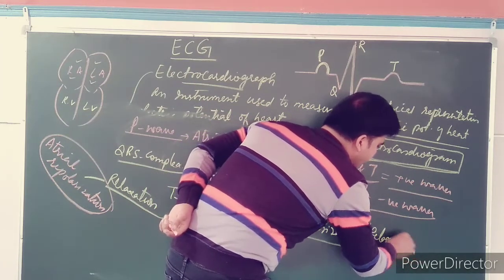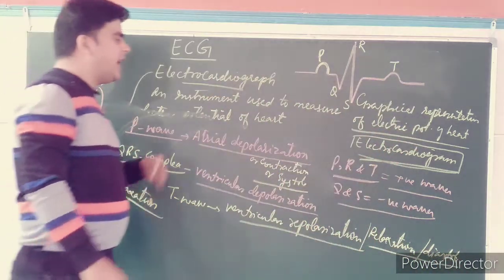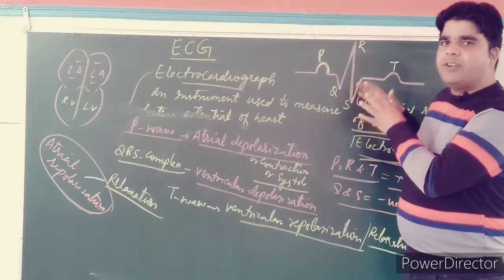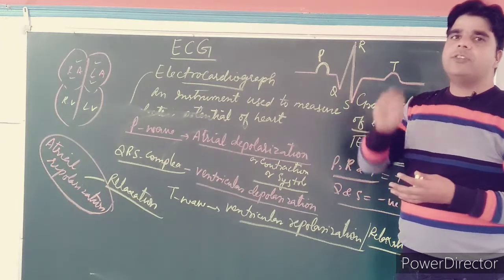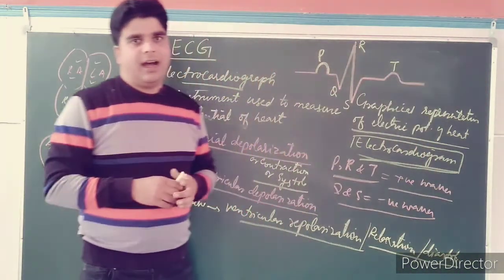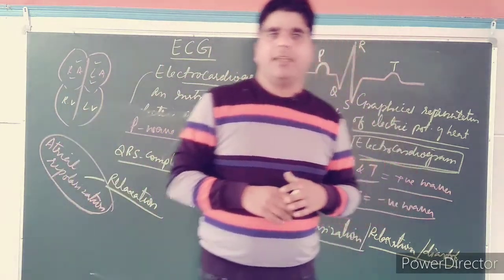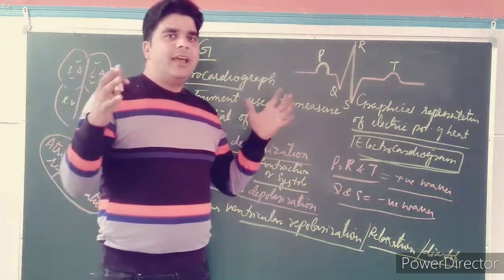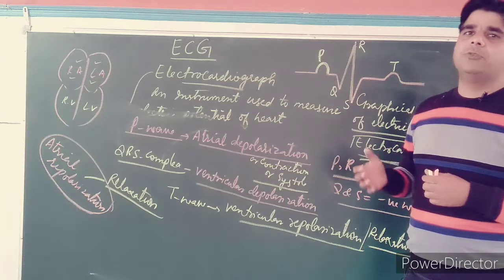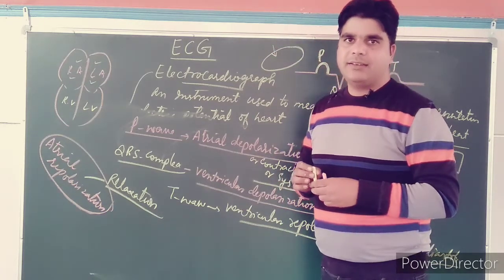Ventricular relaxation can also be called ventricular diastole. So in this way you can interpret what P wave, Q wave, R wave, S wave, and T wave show us. Different waves show different types of contractions and relaxations that actually take place in the heart. Depolarization and repolarization — how exactly this happens — we will study in a separate chapter on muscle contraction or cell biology, under the topic of active transport.